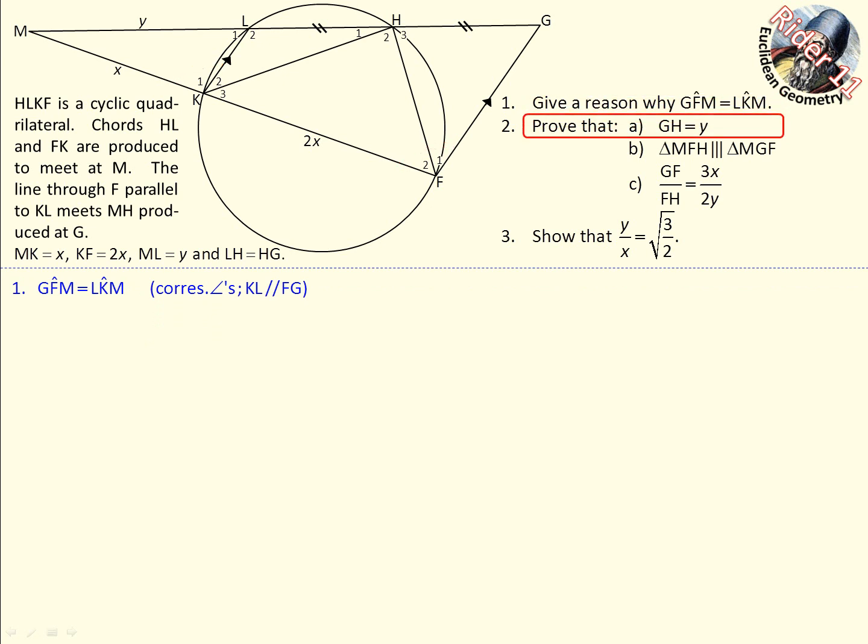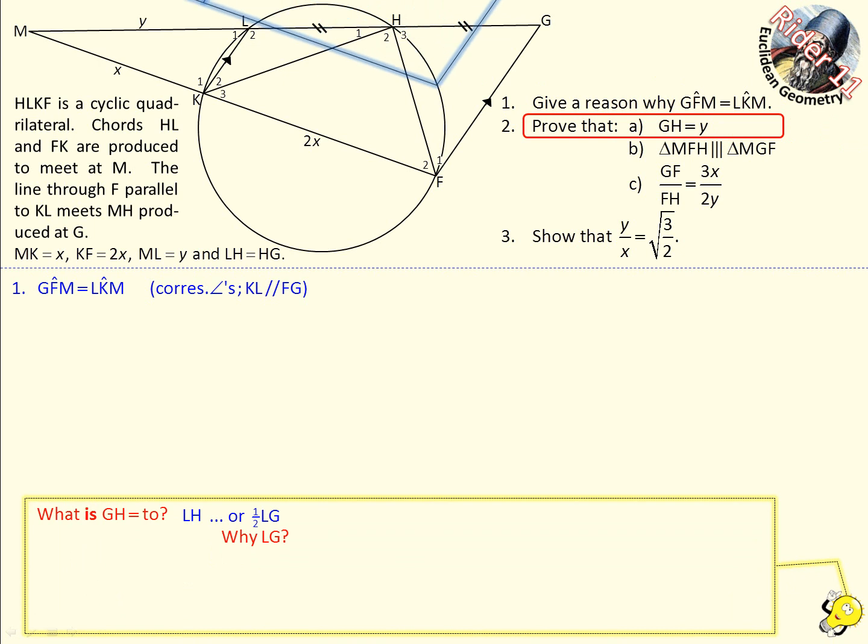Now we have to prove GH equals y. And in previous videos I've said a very good technique in your thought process, which we'll do at the bottom of the page now, is say, well, what is GH equal to? What is GH equal to? Well, GH equals LH, it's given. Or half LG. Now, why would I say half LG? Well, have a look at the diagram there. There's the hint.